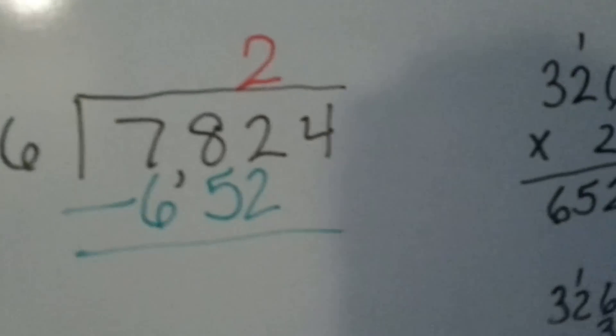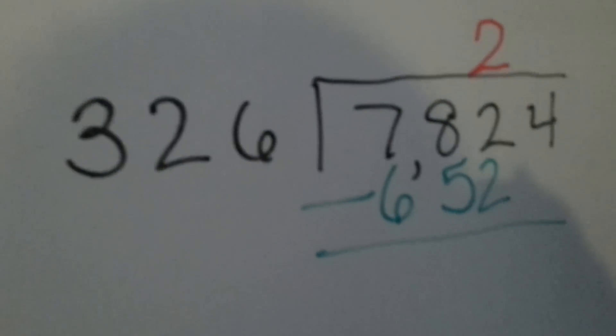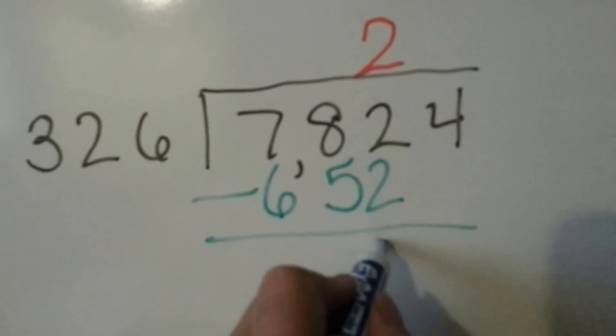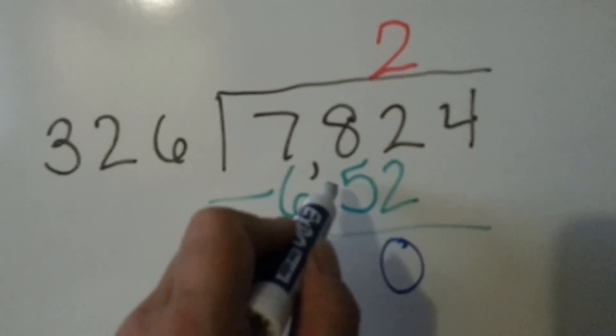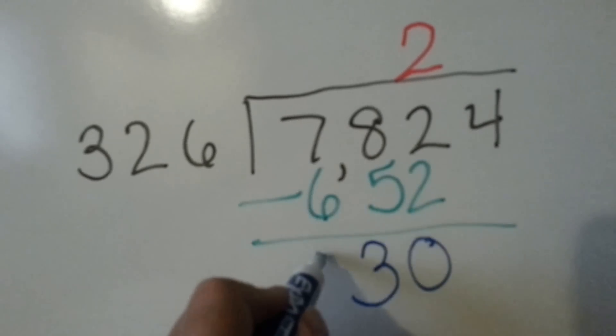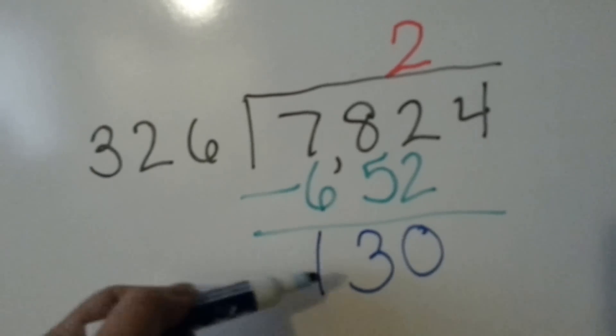Now we're going to subtract. We're going to subtract the 652 from 782 and we're going to come up with 2 take away 2 is 0, 8 take away 5 is 3, and 7 take away 6 is 1. Can 326 fit into 130? Nope.